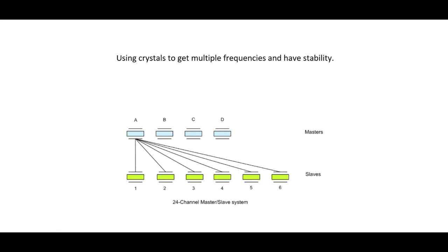Analog oscillators with LC circuits aren't very stable. Analog oscillators like the Hartley, Colpitts, and Clapp give you a wide diversity of frequency coverage, but they don't give you stability. So if you want frequency stability, the only way to obtain that was to use quartz resonators or quartz crystals.